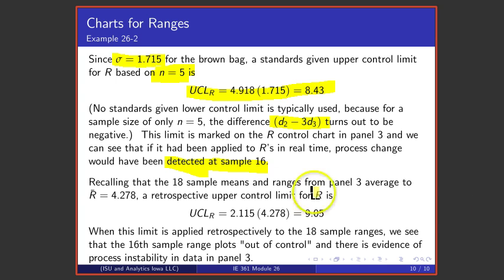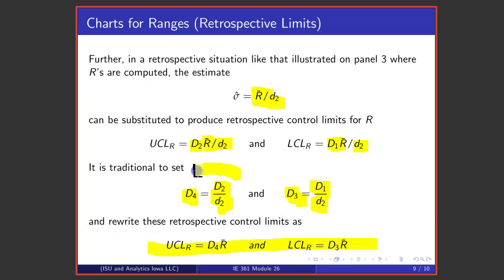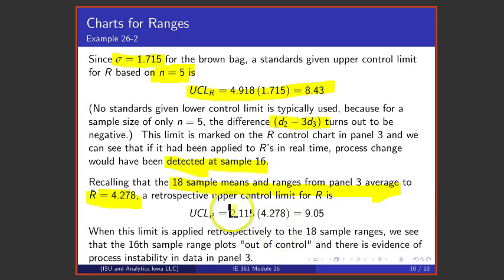If one takes the 18 sample means and averages, that R-bar is 4.278. That means that using the number big D₄ based on a sample size of 5 being 2.115, big D₄ times R-bar is 9.05. If one applies that limit retrospectively to the 18 sample ranges...